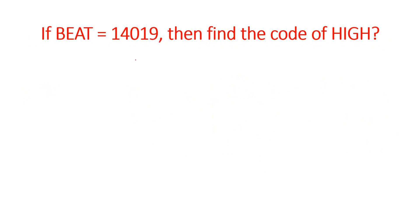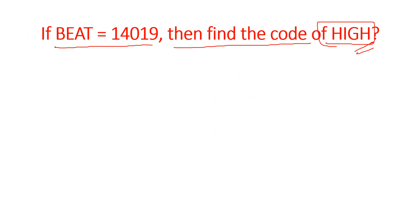Next question: if BEAT is equal to 14019, then find the code of HIGH. To solve this, first we write the codes for BEAT: B is 2, E is 5, A is 1, T is 20. Now clearly observe — the result should be 2, 5, 1, 20, but we get 14019. Observing carefully: 2 minus 1 gives 1; 5 minus 1 gives 4; 1 minus 1 gives 0; 20 minus 1 gives 19. So each letter's position value has 1 subtracted. Now we can clearly see that E gives 2 when 1 is subtracted. This pattern is now clear.